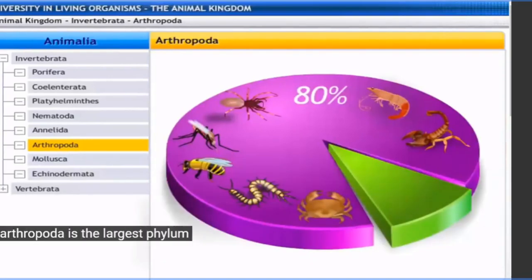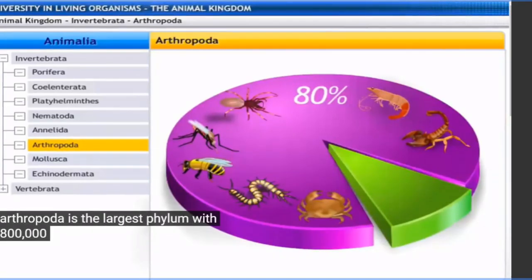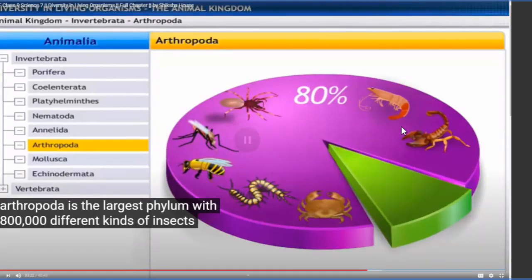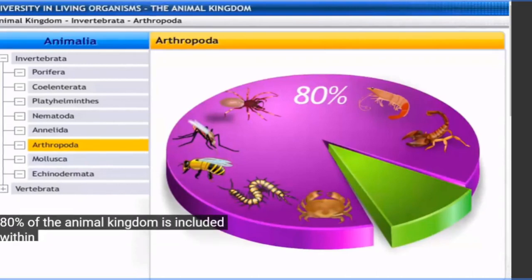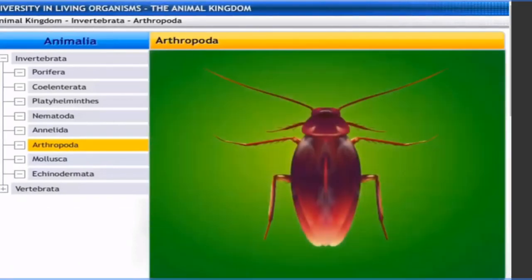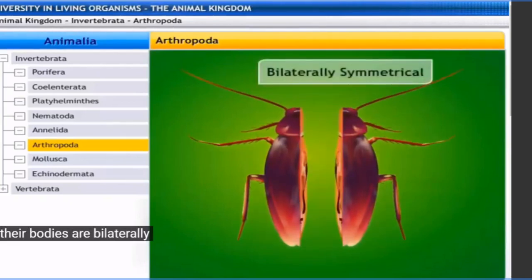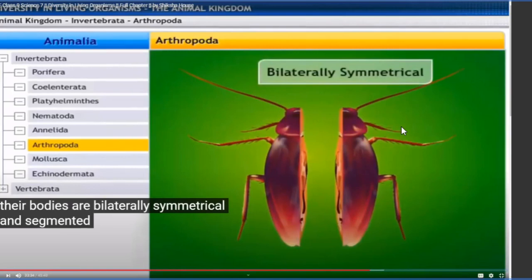Arthropoda has 800,000 different kinds of insects, constituting nearly 80% of the total number of animals categorized under the Animalia kingdom. 80% of the animal kingdom is included within this phylum, which is why it is called the largest phylum. Their bodies are bilaterally symmetrical - the left half is similar to the right half.